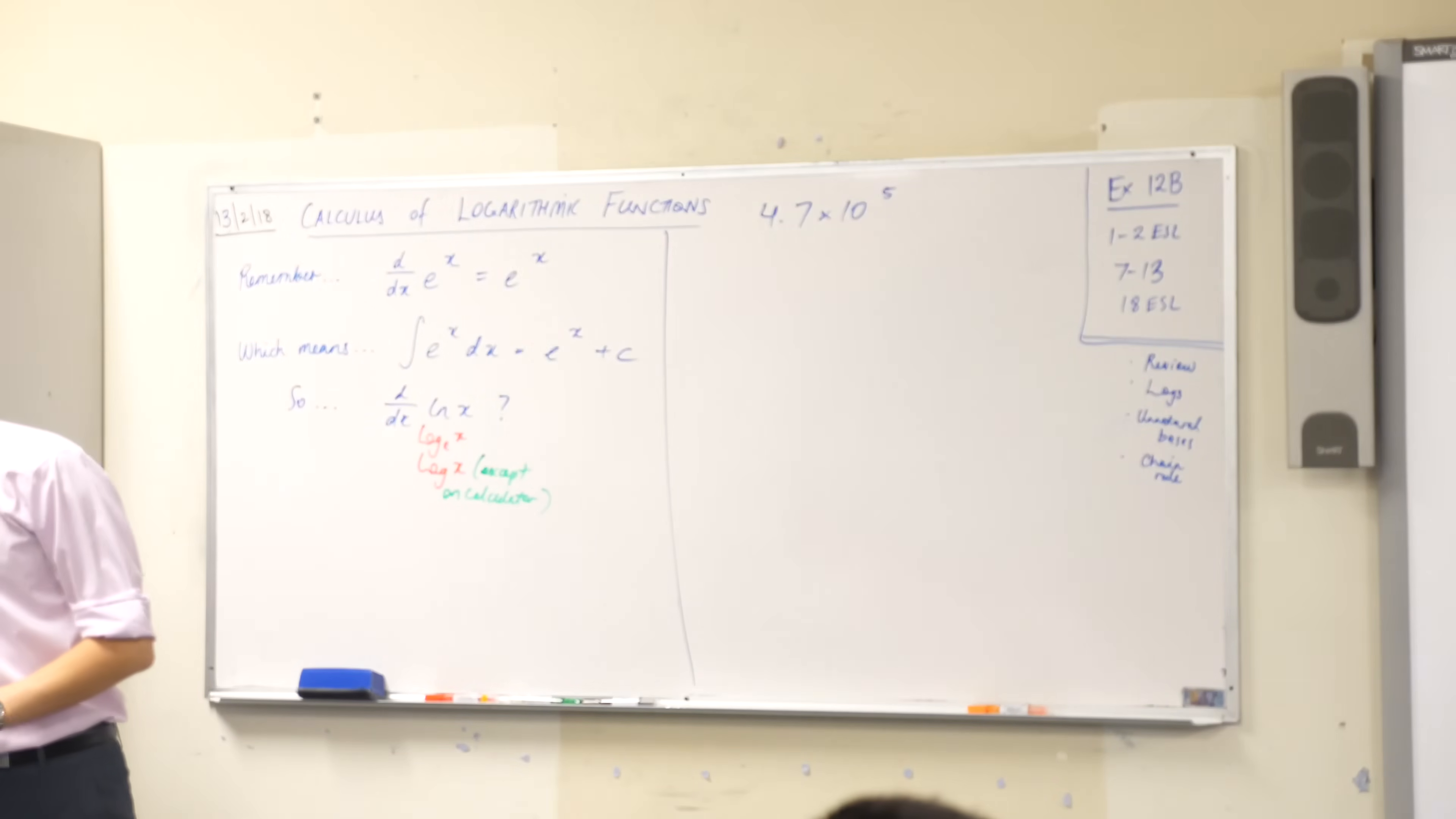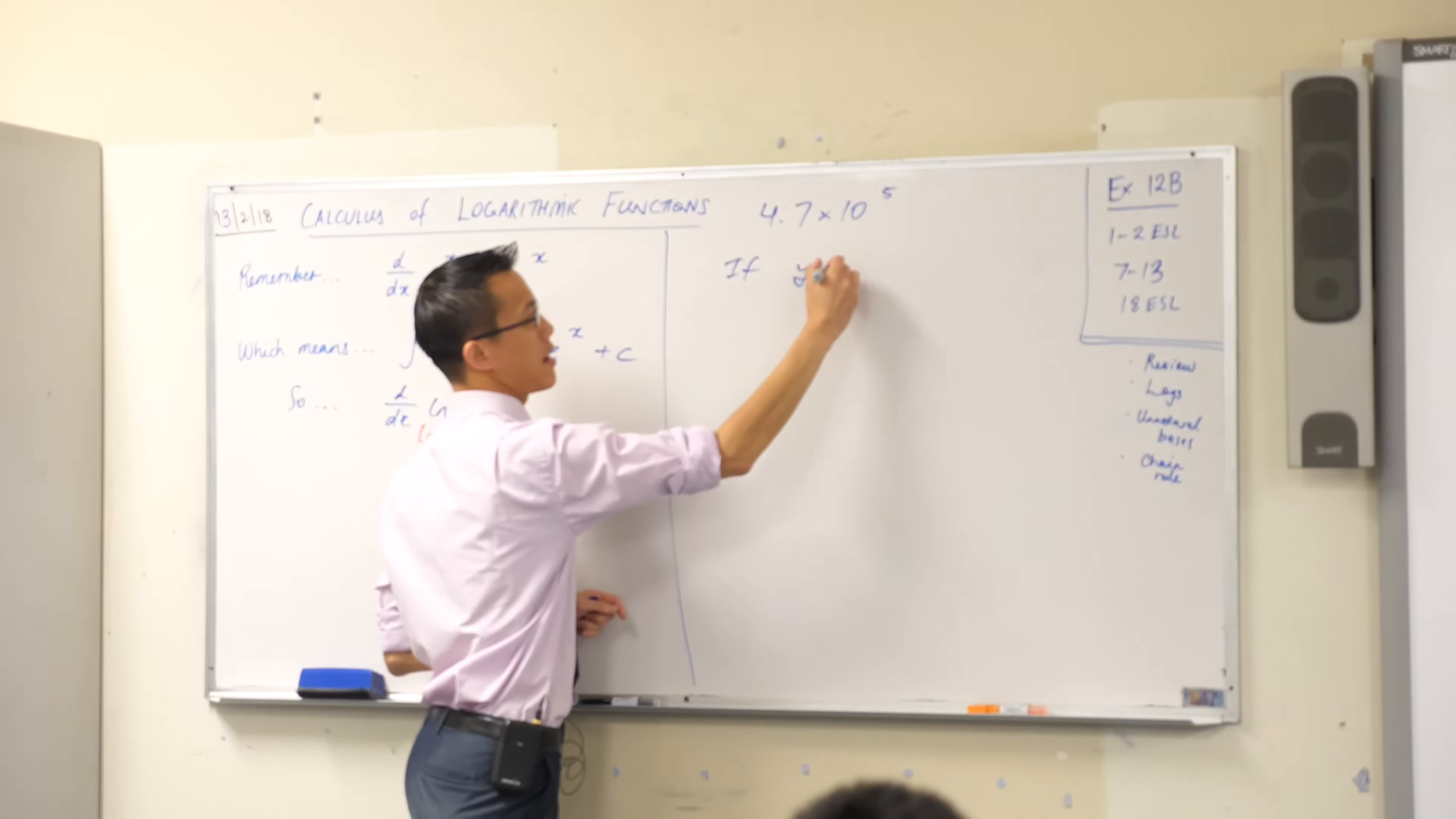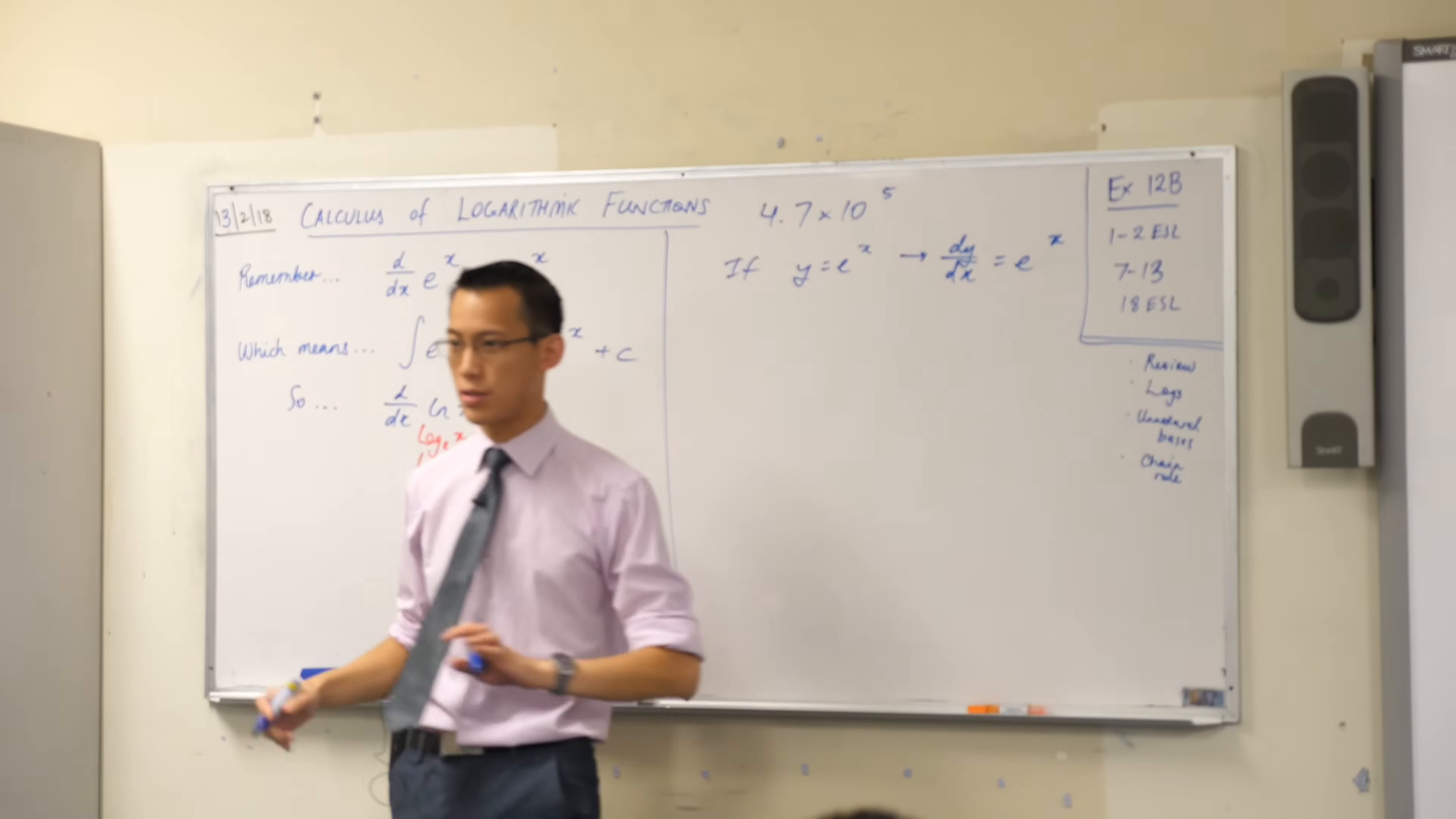Okay, so as so often happens, what we'll do is we'll start with some existing knowledge and then we will move to the part that we want. So if I said y equals e to the x, then I know the derivative of this is just e to the x. That's simple, right? So far so good.